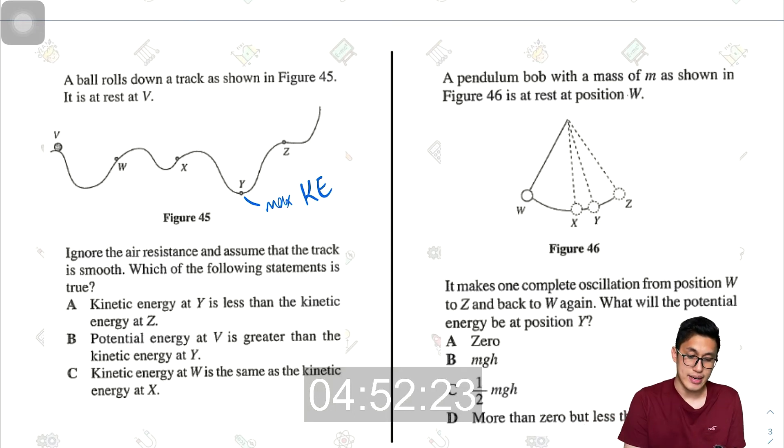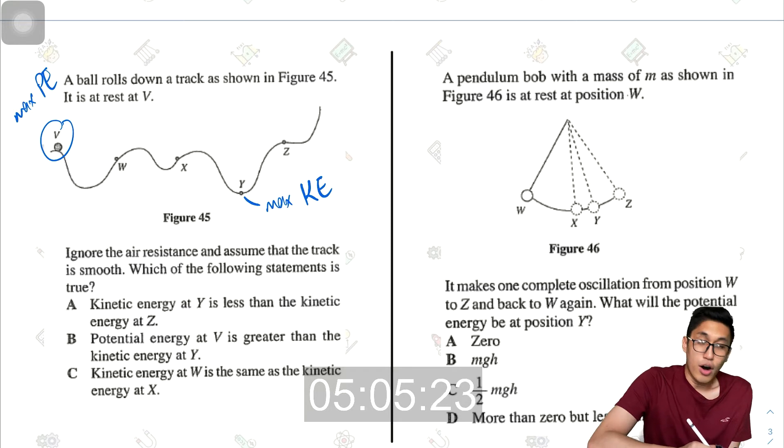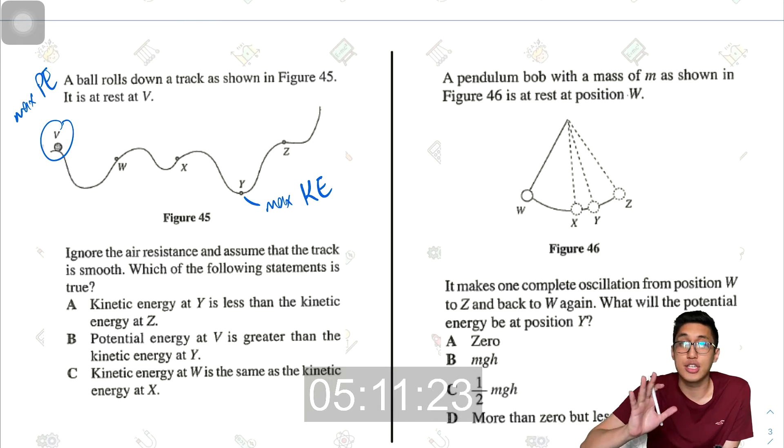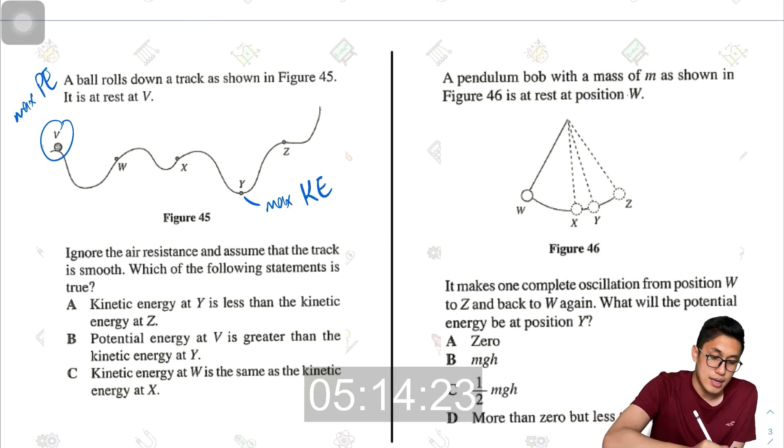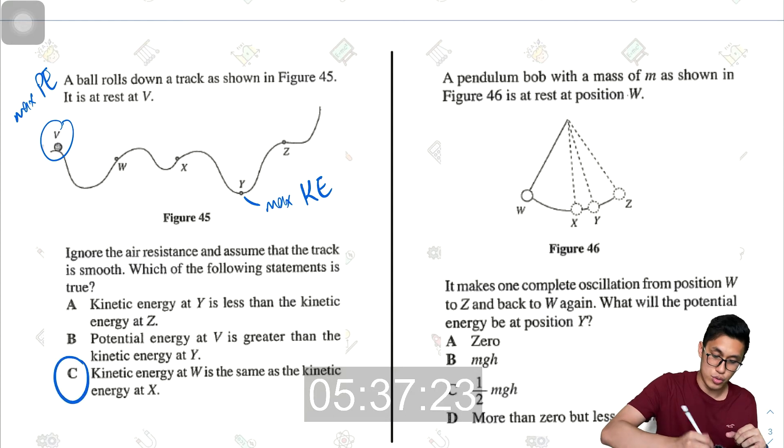So in Y, this would be max kinetic energy. So definitely A is wrong. Potential energy at V is greater than the kinetic energy at Y. Now, this is the highest most part, so this is maximum potential energy. And this is the lowest part, which is maximum kinetic energy. So all the potential energy from here will actually turn into the kinetic energy here. Because we're assuming no energy is lost anywhere else. So B is also wrong. Kinetic energy at W is the same as the kinetic energy at X, which is true because both of them are at the same levels. So this is C.